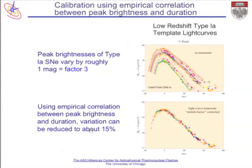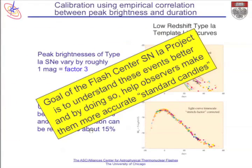Dark energy is one of the most important and profound problems in all of physical science. What we're doing at the University of Chicago's Flash Center is to do the best we can to help better understand these events, and by doing so help observers make them into more accurate standard candles, and thereby determine more accurately the properties of this dark energy.